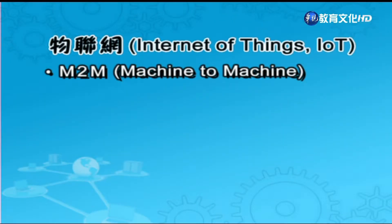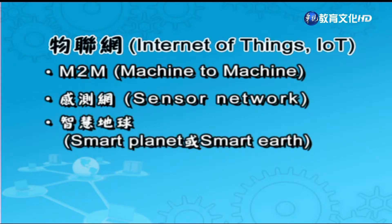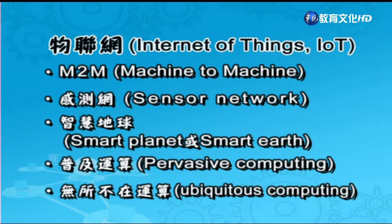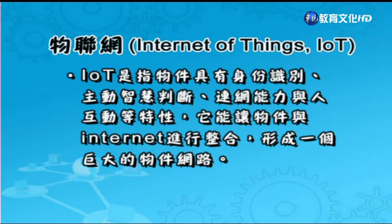物聯網叫做Internet of Things（IoT），有不同的名稱，像M2M（machine to machine）、感測網、智慧地球、普及運算、無所不在的運算。物聯網是指物件具有身份識別、主動智慧判斷、聯網能力與人互動等特性，能讓物件與Internet進行整合，形成一個巨大的物件網路。未來的物聯網不僅能提供聯網，更能讓每個聯網物件提供服務，形成所謂的服務聯網（Internet of Service）。